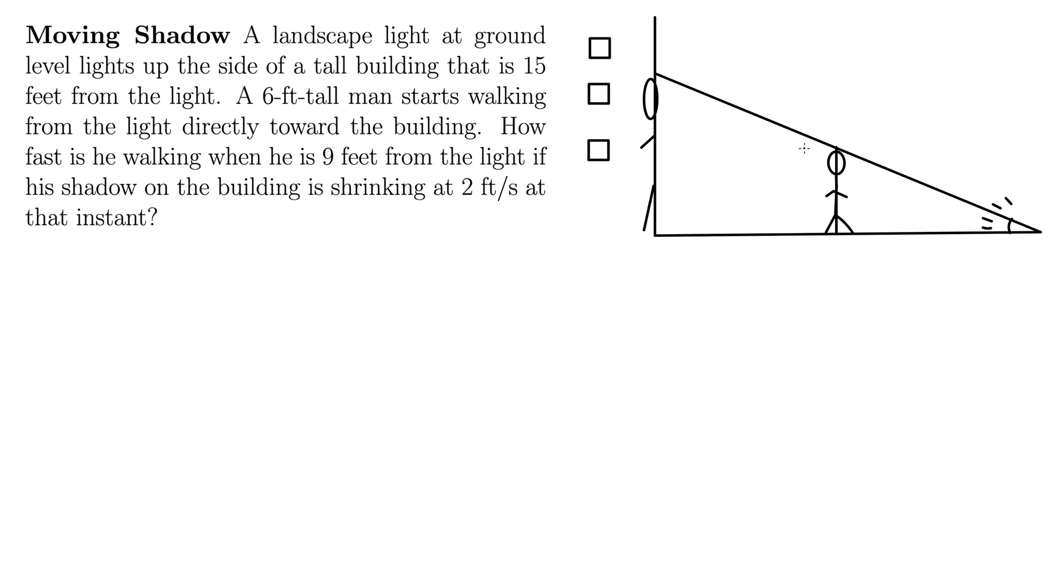We can label some more stuff here. This man is 6 feet, this distance here is 6. And we know that the total distance from the building to the light is 15 feet. So you maybe can start to see that we'll be using similar triangles here, because what we're doing is forming one triangle inside of another. There's the small one, here's the large one.